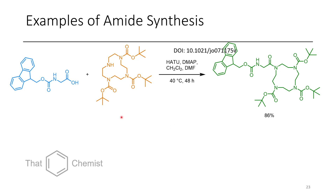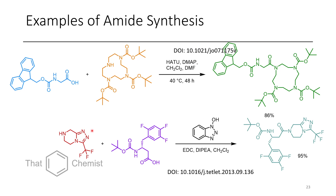Some examples of amide synthesis include the coupling of an Fmoc-protected amino acid glycine — Fmoc is the fluorenone methanol group, deprotected under basic conditions — with a cyclic polyamine, which is functionalized at the unreacted position giving an amino acid adduct product. In another example, a 1,2,4-triazole is coupled with a Boc-protected amino acid derivative to give the amide product.